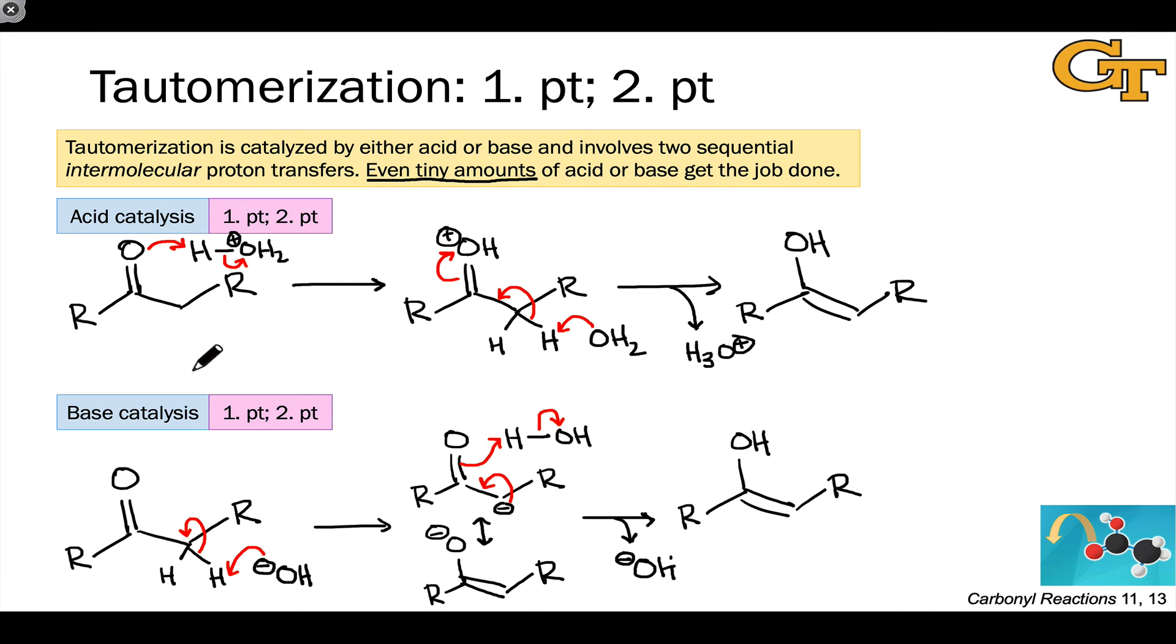So either acidic or basic conditions can catalyze tautomerization. And this tends to be very, very rapid. And so really, both of these arrows should be drawn as reversible arrows going back and forth since these equilibria are established very rapidly.